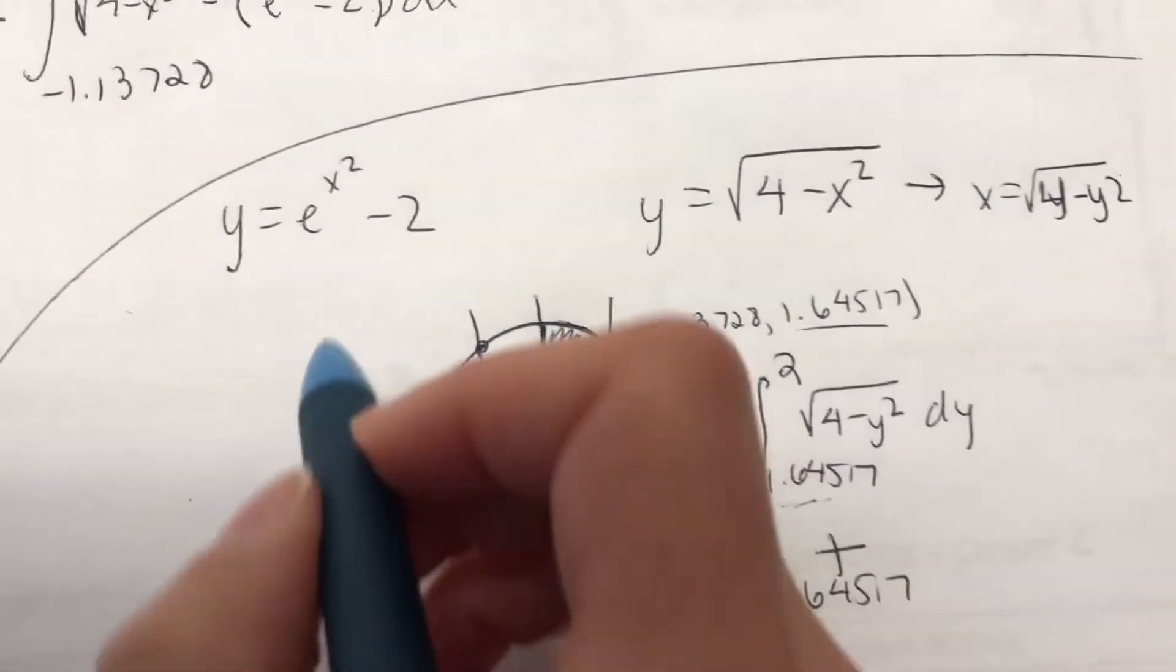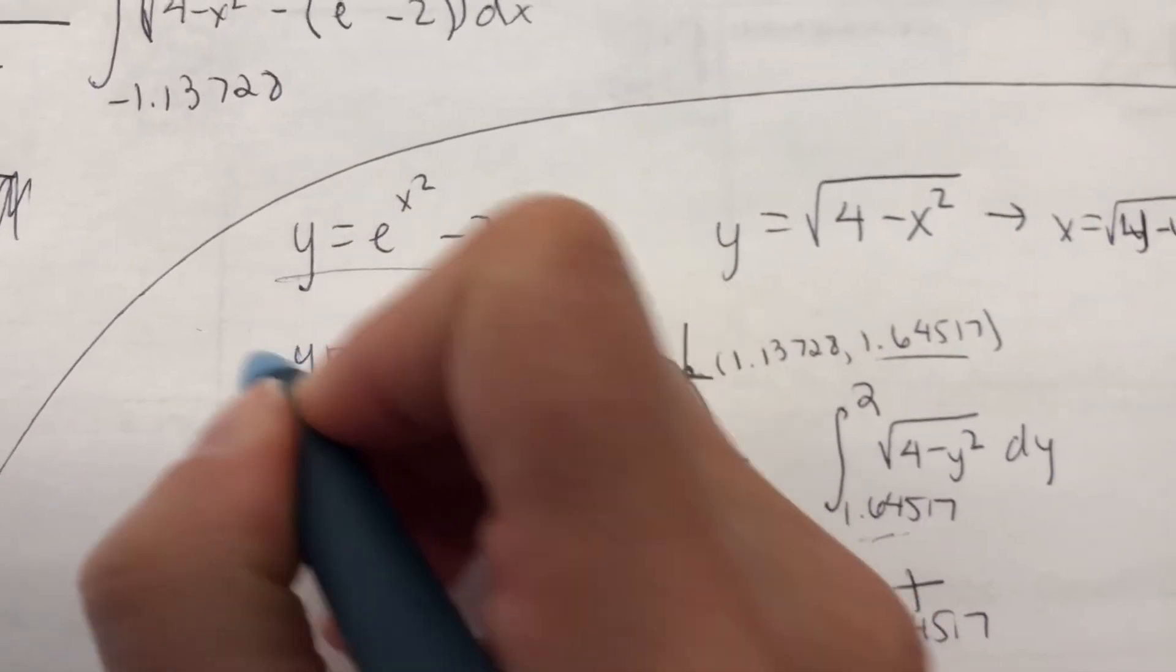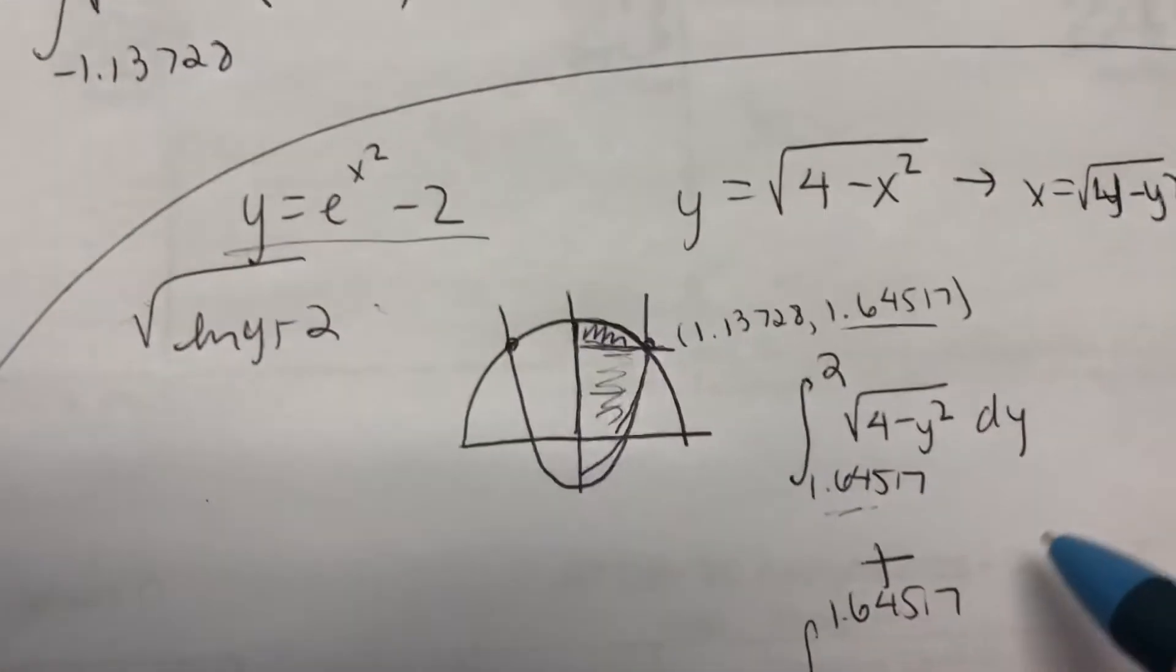And then you just have to solve this one for x. So y plus 2, and then ln both sides, and then square root it. How nasty is that?